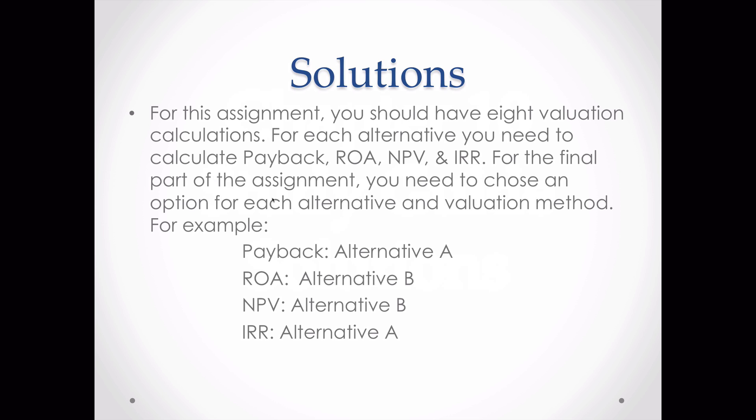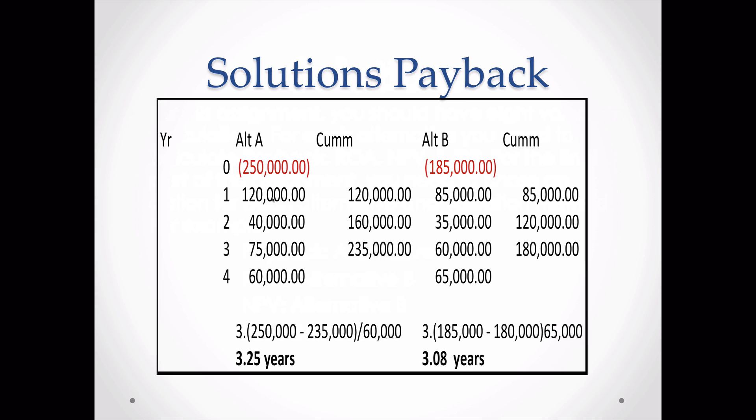Not only do you need to get the correct answers, but you need to choose the best option based on your answers — that's what the part C is on the study guide. For Alternative A, we have four years of cash flows: $120,000, $40,000, $75,000, and $60,000, with a $250,000 initial investment. I do a cumulative column: year one is $120,000, year two adds $40,000 to get $160,000, year three adds $75,000 to get $235,000.